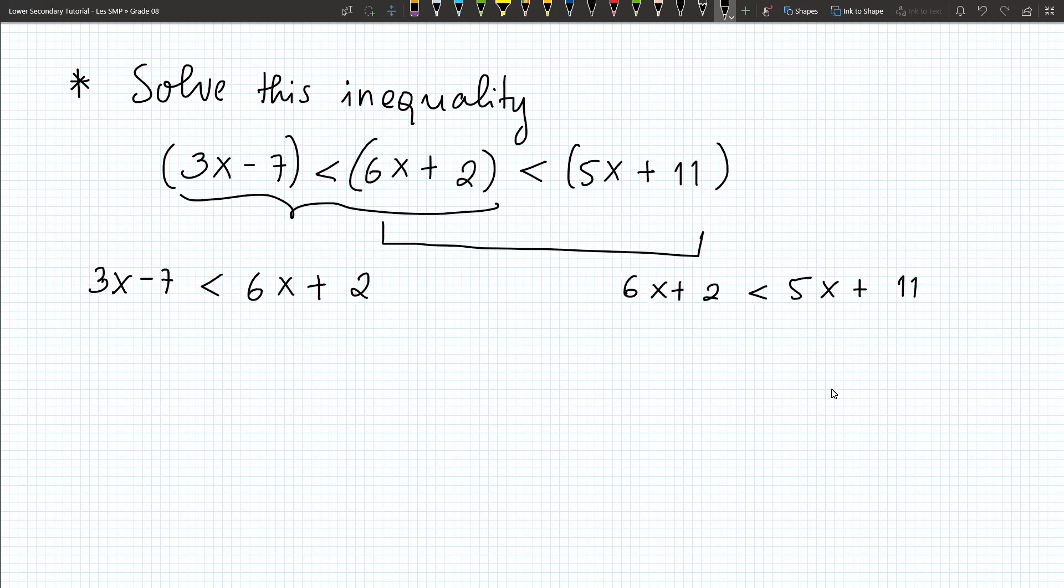And now, I can flip this first, 6x plus 2 is greater than 3x minus 7. So I subtract 3x from both sides, minus 2 from the left side and right side also, so I have 3x greater than negative 9. So x is greater than negative 3.